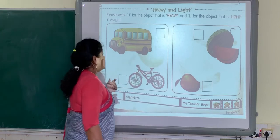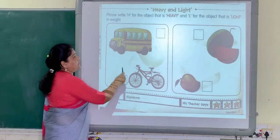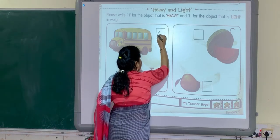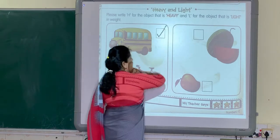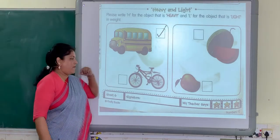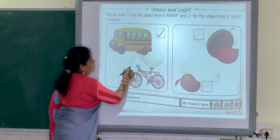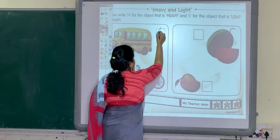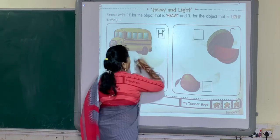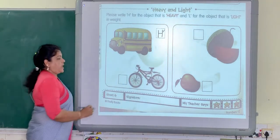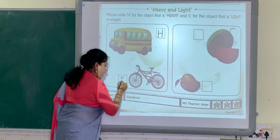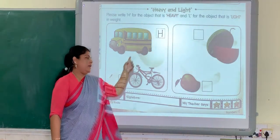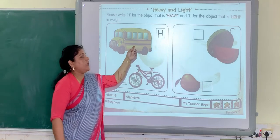Understood? Now let's do the activity. This one is heavy, so the teacher is going to put a tick mark in this box. Now, teacher is going to write H for heavy and L for light. Heavy, light. Heavy, light.